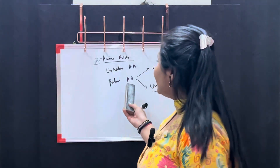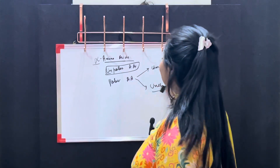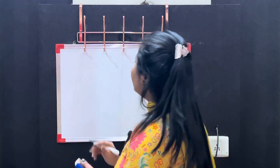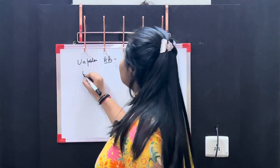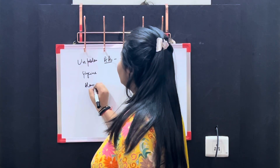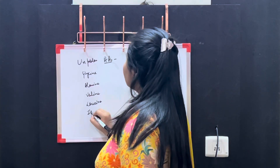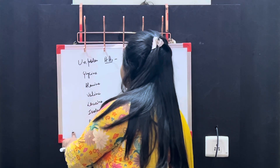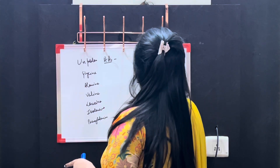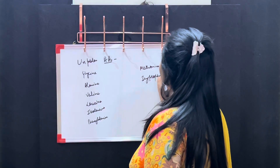We are going to discuss in detail what are our non-polar amino acids and what are our polar amino acids. In non-polar amino acids we have: glycine, alanine, valine, leucine, isoleucine, phenylalanine, methionine, tryptophan, and proline.